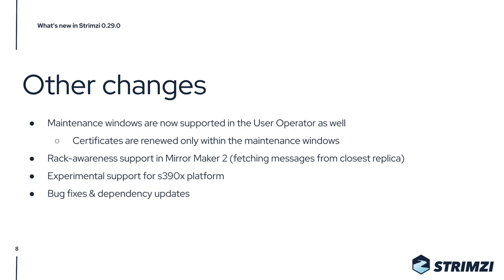There are also some smaller updates. Maintenance windows are now supported in the user operator as well, so when user certificates need to be renewed, the renewal will happen only within the maintenance window. There's also rack awareness support for MirrorMaker 2, so you can fetch messages from the closest replica instead of the leader replica. In addition to the existing AMD64 and ARM64 platforms, we are now adding support for the S390X platform. And of course, there are many other bug fixes and dependency updates in this release as well.